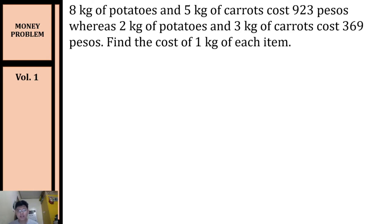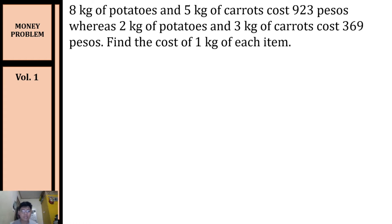Eight kilograms of potatoes and five kilograms of carrots cost 923 pesos, whereas two kilograms of potatoes and three kilograms of carrots cost 369 pesos. Find the cost of one kilogram of each item. In this word problem we're looking for the price of one kilogram of potatoes and one kilogram of carrots.